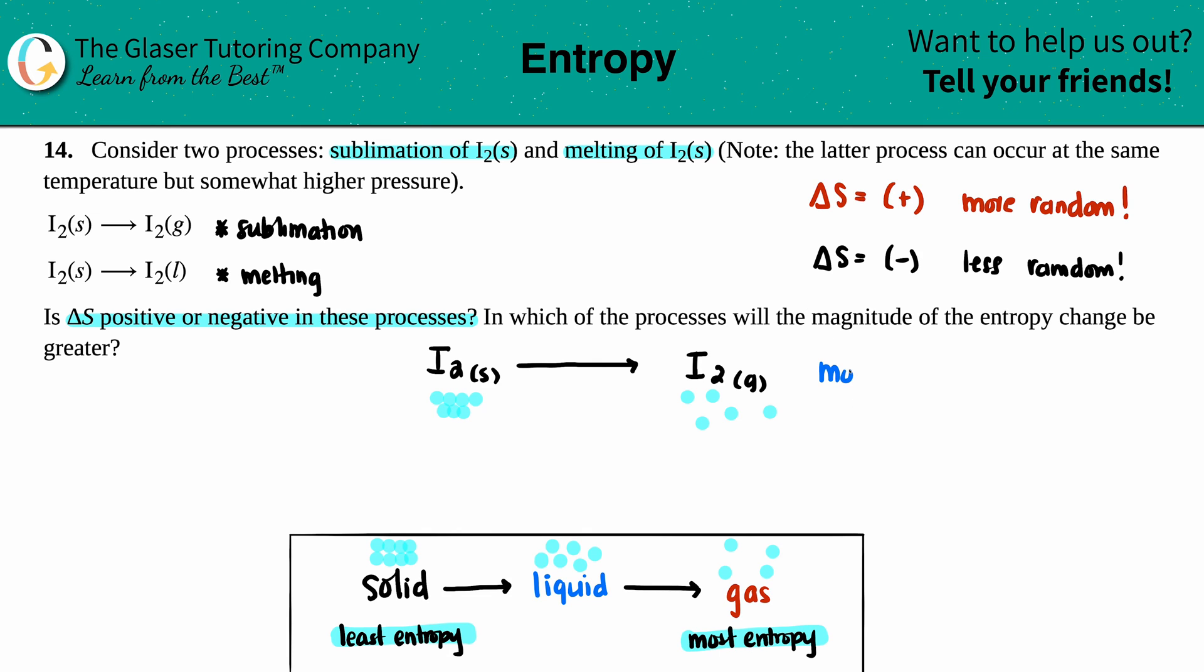Are we going to something that is more random or less random? Yeah, we're going to something that's more random. So if that's the case for this, the ΔS would be a positive value. So for sublimation, ΔS would be a positive.